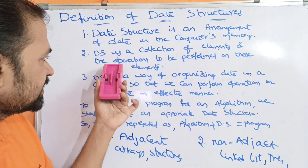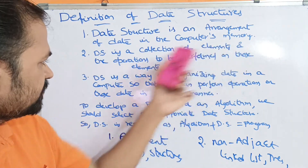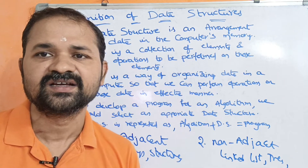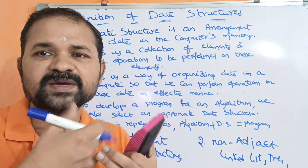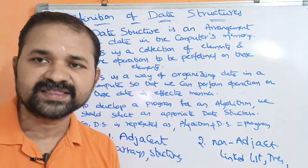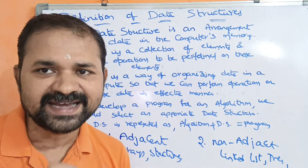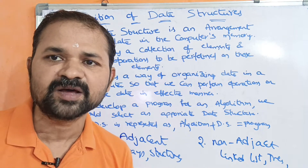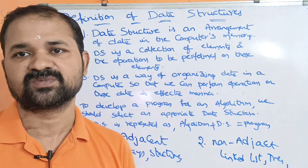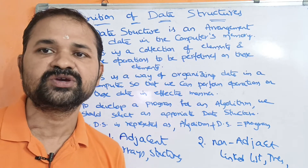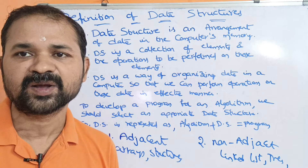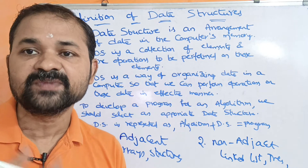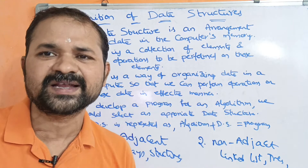The second definition is: data structure is a collection of elements and the operations to be performed on those elements. For example, a stack is a data structure — it has a collection of elements, and push and pop operations are performed. Similarly, a queue has enqueue and dequeue operations performed on its collection of elements.